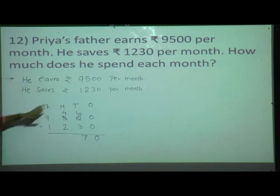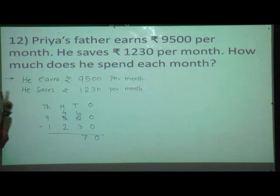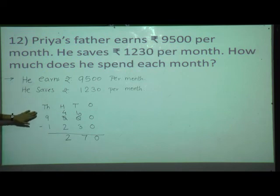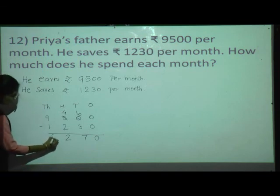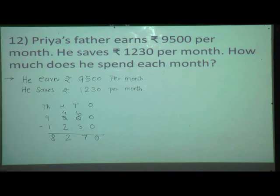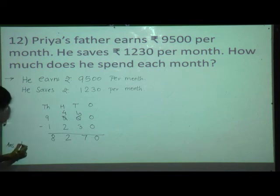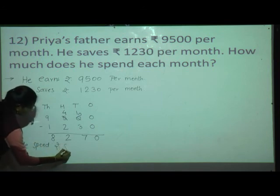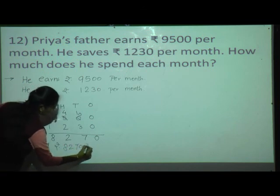Then see the hundreds place: here 4 is there, here 2 is there. 4 minus 2 is equal to 2. Write 2 at hundreds place. See the thousands place: here 9 is there, here 1 is there. 9 minus 1 equals 8. So how much money did he spend each month? He spent Rs. 8,270 per month. Write the answer in the sentence: He spent Rs. 8,270 per month.